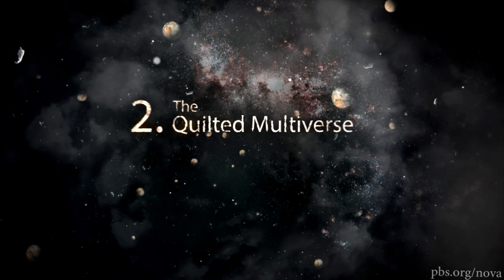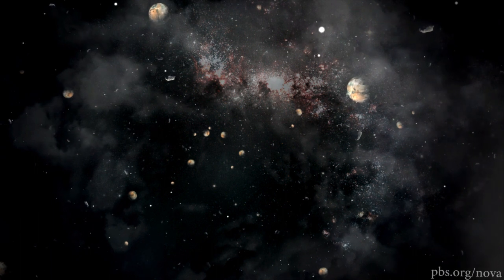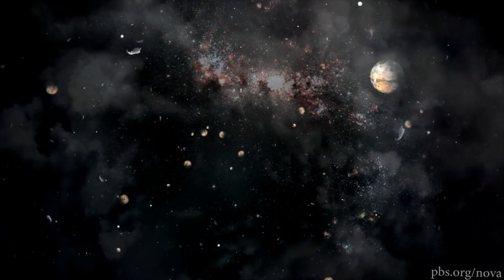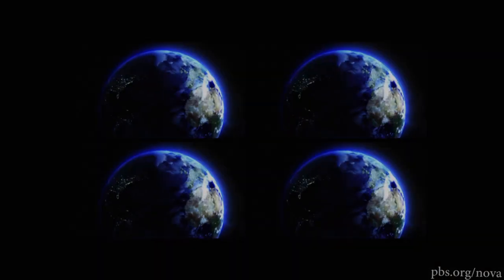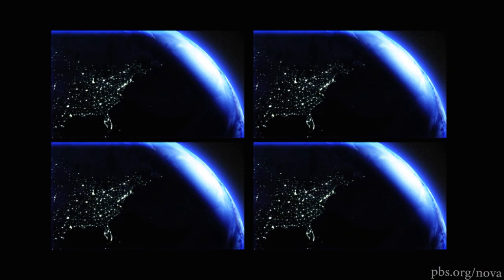The quilted multiverse. In this model, there's really just one universe, but it's not just big. It's truly infinite. So infinite that if you could search through the infinite space, search the infinite galaxies with infinite stars, you'd eventually find a number of planet Earths just like our own. And on some of those Earths, you'd even find someone identical to you.